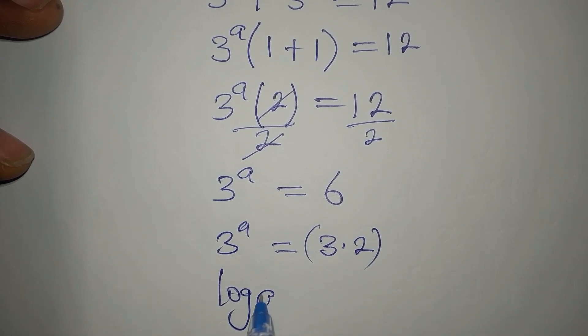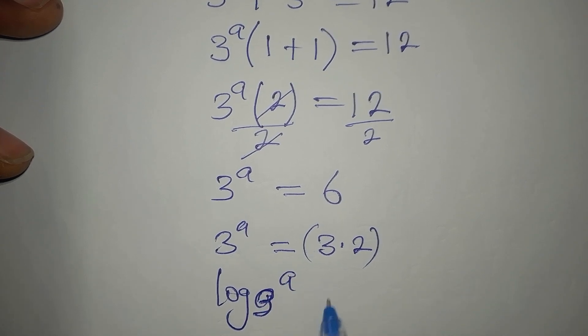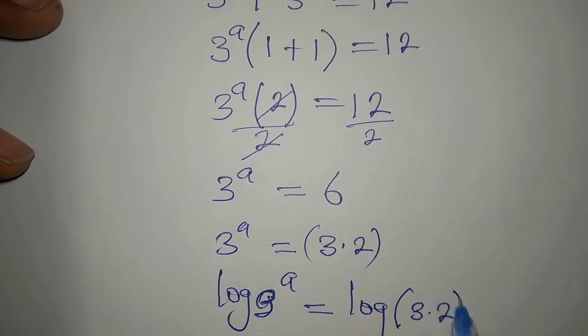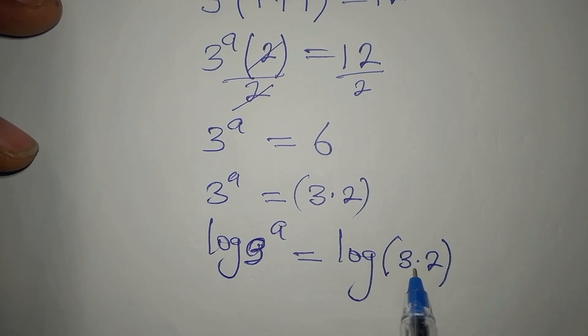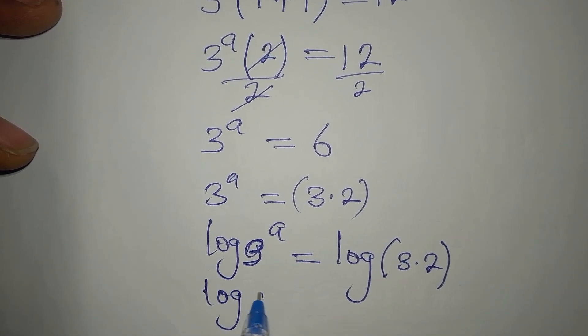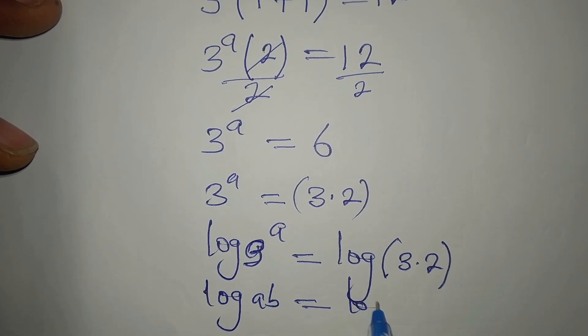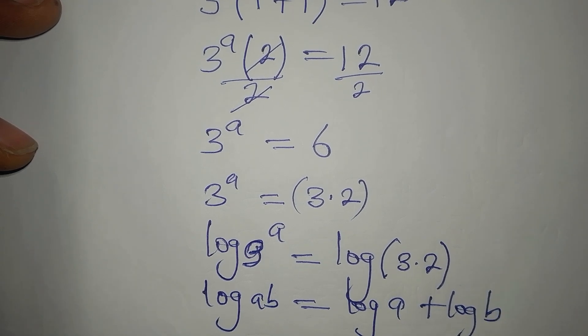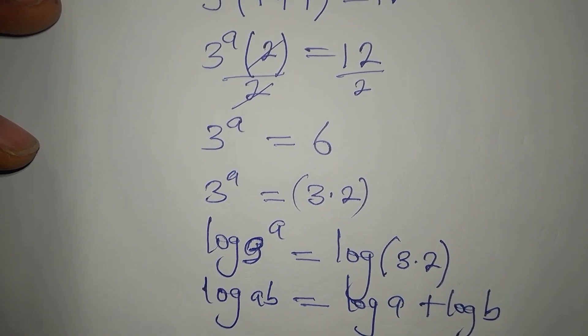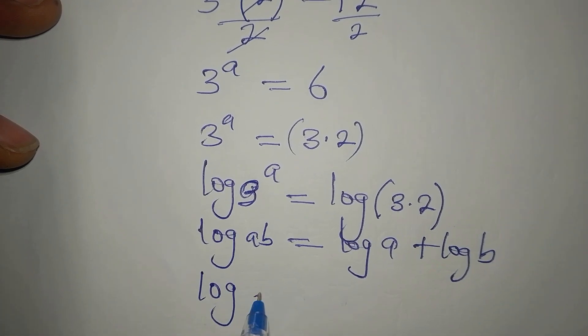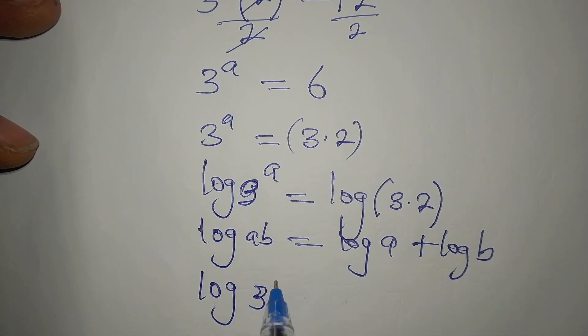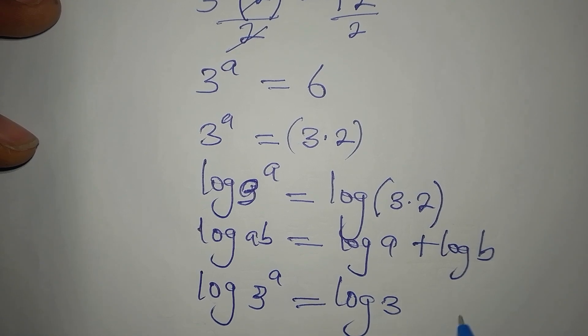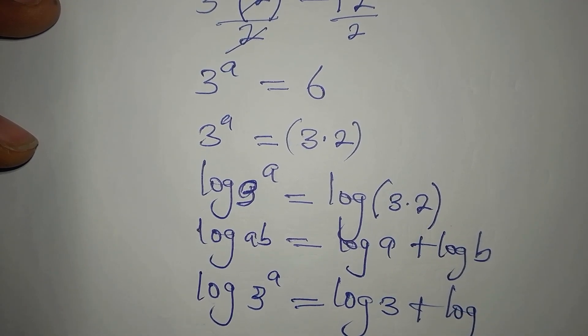Now, let's introduce our log. Log 3 to the power of a is equal to log 3 times 2. Now, do you remember this law? Log a times b is the same as log a plus log b. So I'm going to express this in this form. So I'll write log 3 to the power of a first. Then on the other hand, I have log 3 plus log 2.